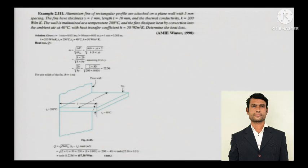The first step is to calculate the fin parameter m. The formula is m = √(hP/kA), and this remains the same whether it is an insulated tip or an infinitely long fin. Here, P is the perimeter — for a rectangular cross-section it is 2×(breadth + thickness) — and A is the cross-sectional area, which is breadth × thickness.